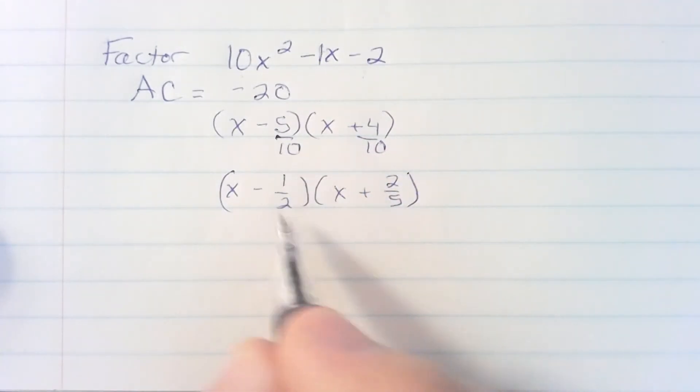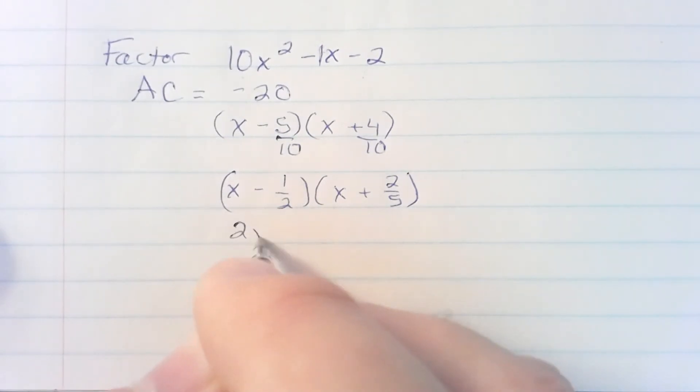Since I still don't have nice whole numbers, I take the denominators and move them to the front of the x term. 2x minus 1, 5x plus 2.